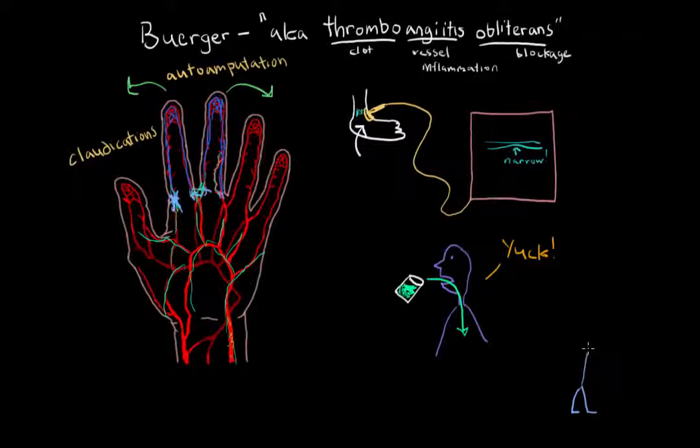A risk factor of this disease is smoking. The pathophysiology isn't quite understood, but it's believed that something in the tobacco or something in the cigarette is causing the immune system to respond. And for some reason, vessels in your hands and your feet are affected.